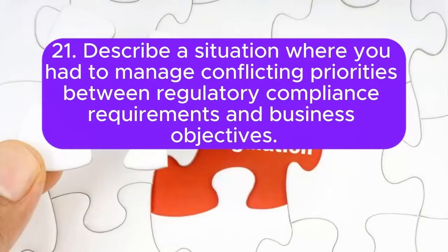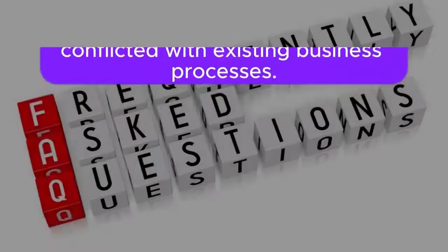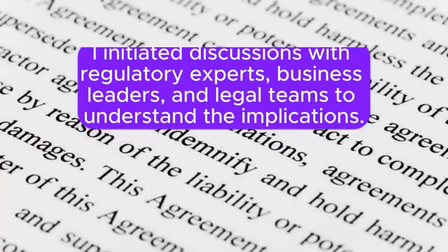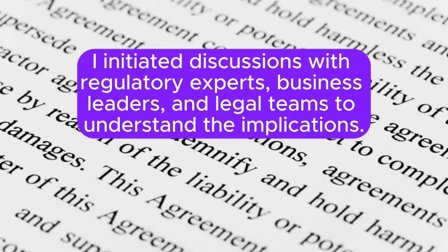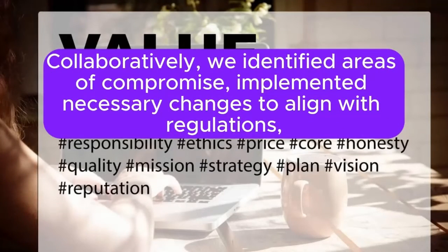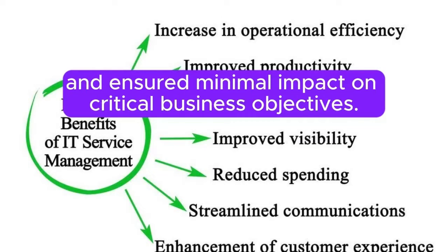Question 21: Describe a situation where you had to manage conflicting priorities between regulatory compliance requirements and business objectives. How did you navigate and resolve the conflict? Answer: I encountered a situation where new regulatory requirements conflicted with existing business processes. I initiated discussions with regulatory experts, business leaders, and legal teams to understand the implications. Collaboratively, we identified areas of compromise, implemented necessary changes to align with regulations, and ensured minimal impact on critical business objectives.